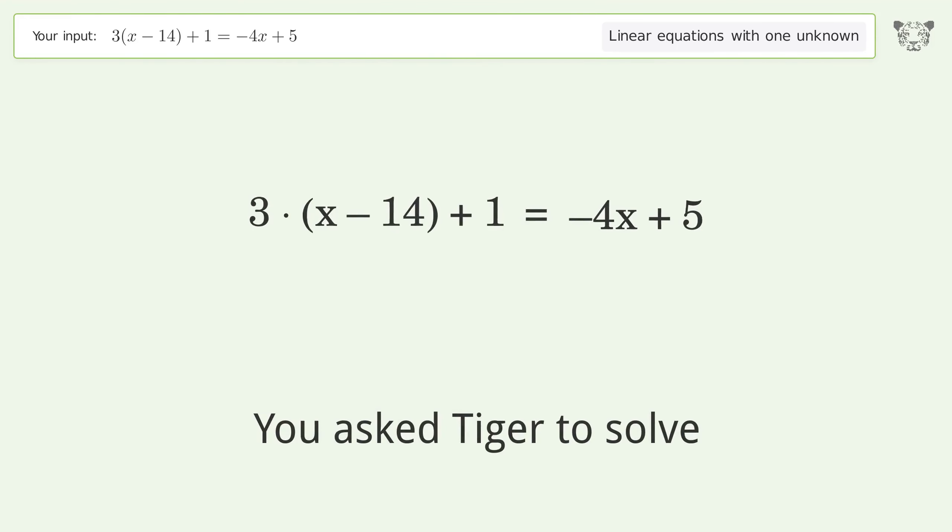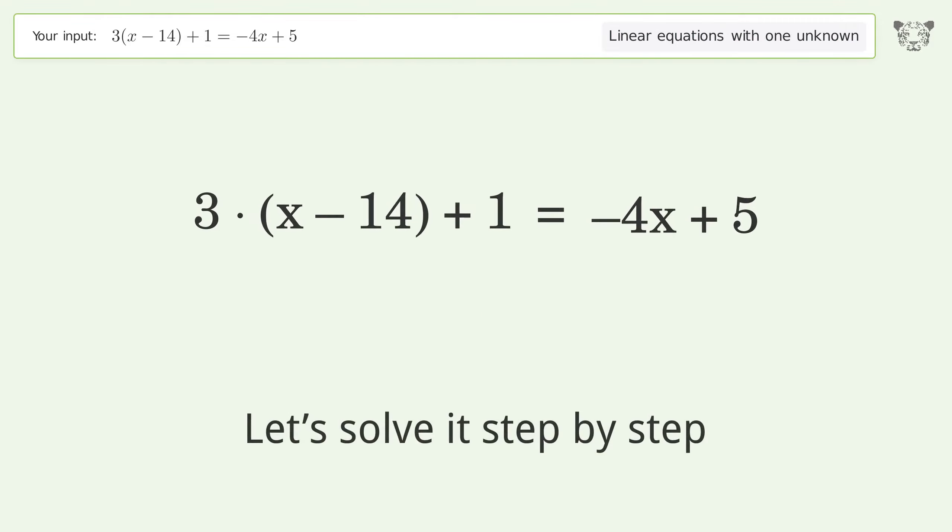You Asked Tiger to Solve. This deals with linear equations with one unknown. The final result is x equals 46 over 7. Let's solve it step by step.